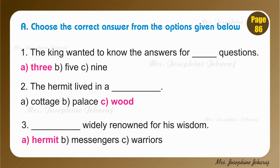Number 2. The hermit lived in a blank. The hermit lived in the forest. Forest is the other word for wood. So the answer is: the hermit lived in a wood.